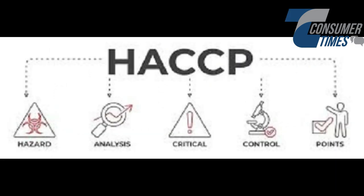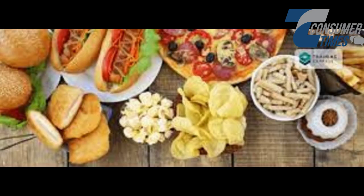In production facilities, biological hazards such as bacteria can thrive if sanitation measures are inadequate. Workers must follow hygiene protocols, including proper hand washing and the use of gloves and hair nets. Raw materials must be stored and handled under appropriate conditions to avoid spoilage. During manufacturing, CCPs like cooking or pasteurization must be carefully controlled. Critical limits for time and temperature must be adhered to — for instance, milk must be pasteurized at 72 degrees Celsius for 15 seconds to eliminate pathogens like Listeria and Salmonella.